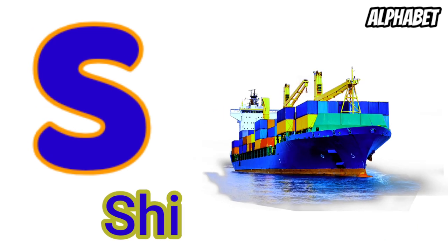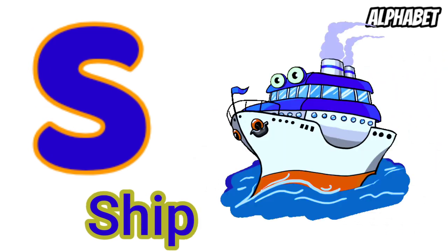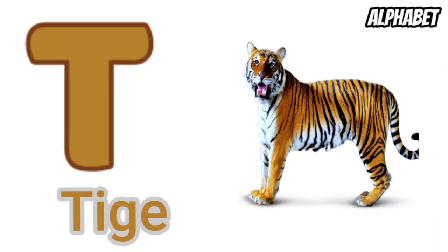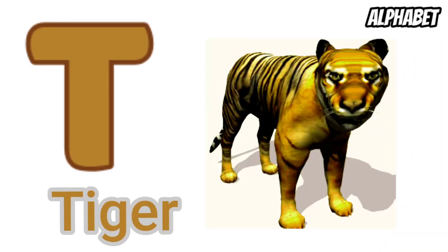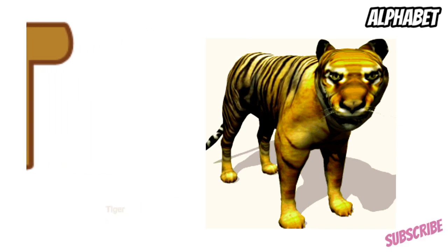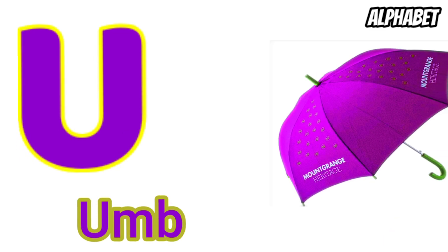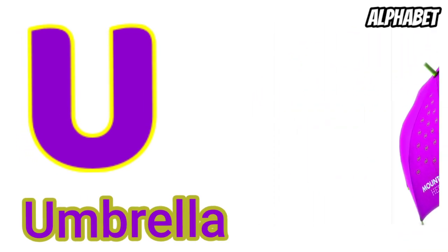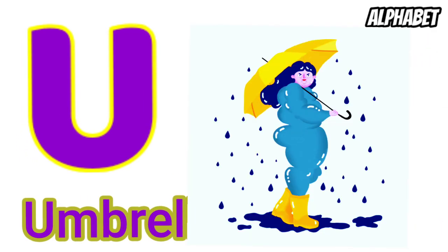S for sheep, T for tiger, U for umbrella.